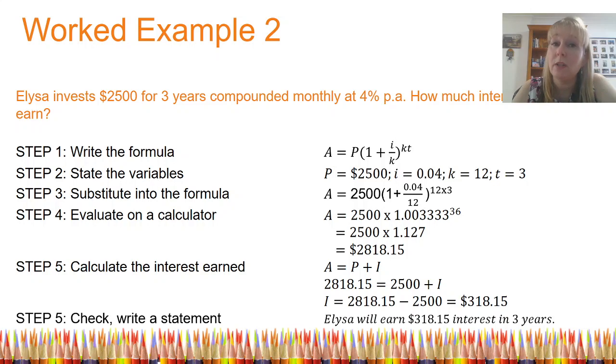And of course, my final step is to write a statement and to check my work. Well, once again, $318 seems fairly reasonable. I've checked that I've got a dollar sign. I've got two decimal places. I could also go back over some of those complex calculations using my calculator and make sure I haven't rounded too early, for example.